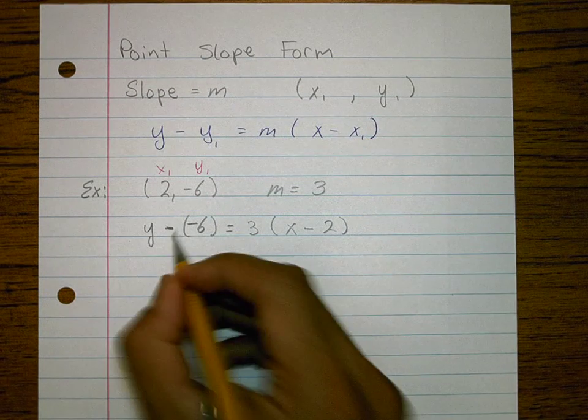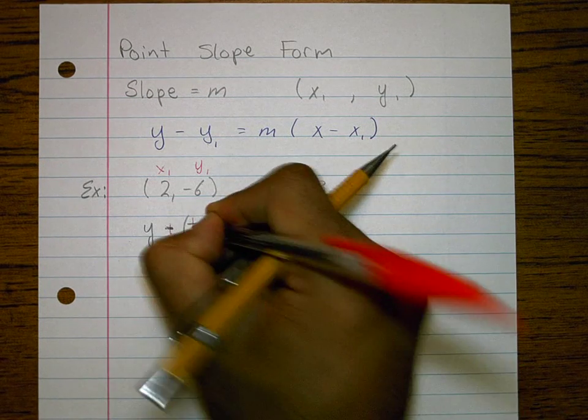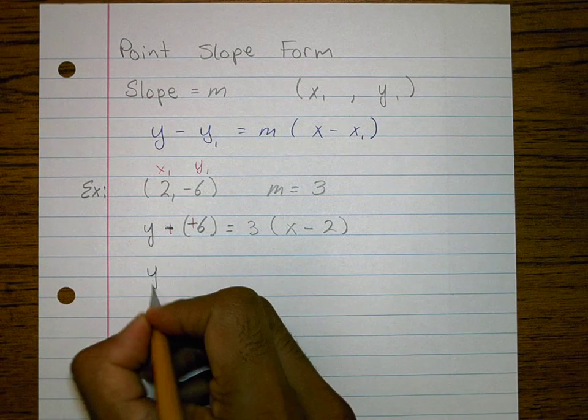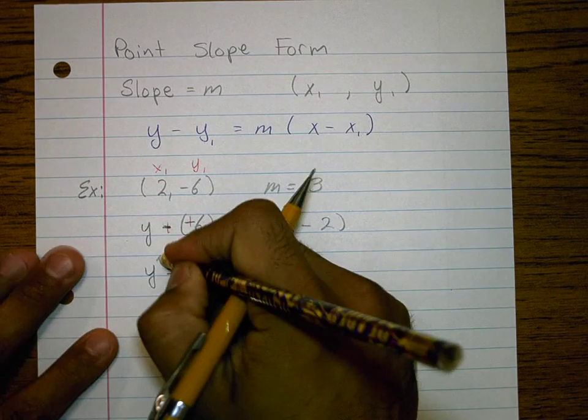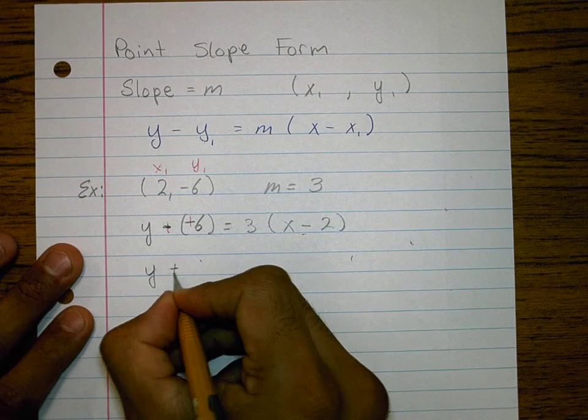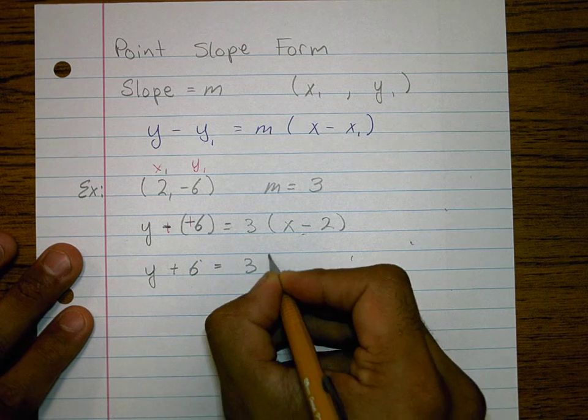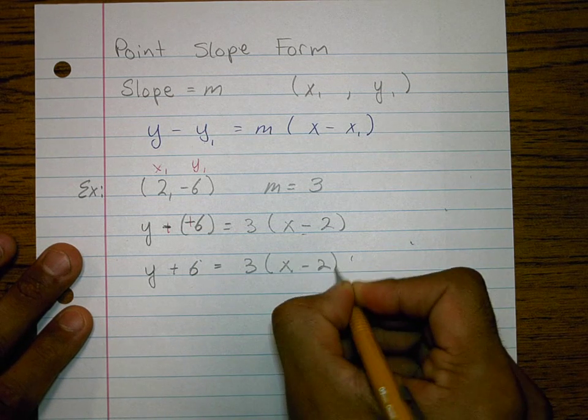And I can go ahead and add the opposite here. And I get y plus 6 equals 3 times x minus 2.